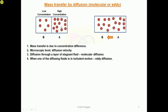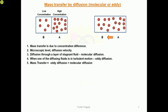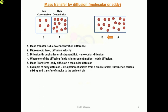When one of the diffusing fluids is in turbulent motion, it is called eddy diffusion. Eddy diffusion mass transfer is greater than molecular diffusion mass transfer because one fluid is in turbulent motion. An example of eddy diffusion is dissipation of smoke from a smoke stack — turbulence causes the mixing and transfer of smoke to the ambient air.